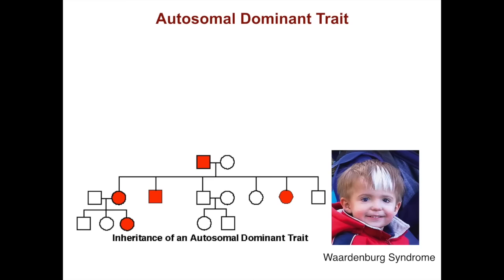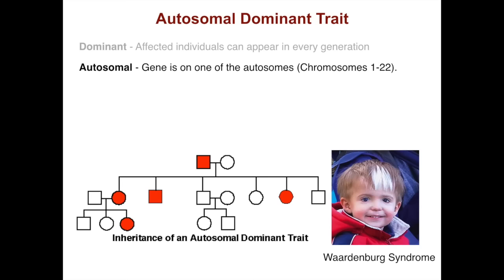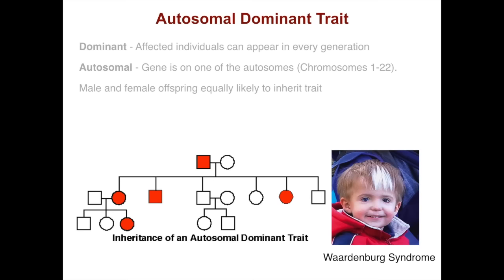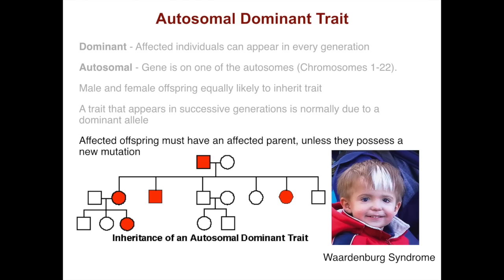Autosomal dominant traits are a little different. Affected individuals can appear in every generation. This is an example of Waardenburg syndrome — it is autosomal because the gene is on one of chromosomes one through twenty-two. Male and female offspring are equally likely to inherit the trait. A trait that appears in successive generations is normally due to a dominant allele, and there are many affected individuals in such pedigrees. Offspring that are affected must have an affected parent unless they possess a new mutation, which would be rare but possible.